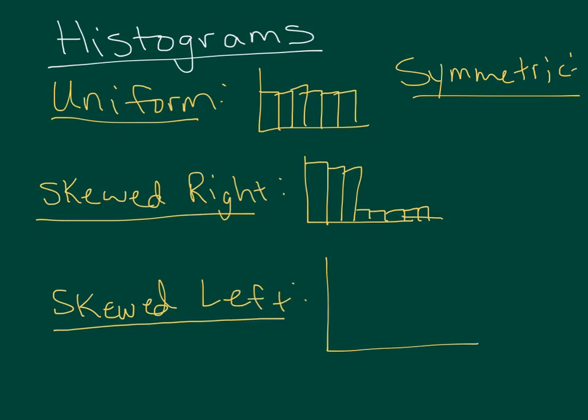Skewed left is just opposite, meaning you have an outlier on the left side. So you have maybe outliers over here, and then you have the majority of your data over here. And symmetric means like perfect, same on both sides. So it's kind of like a stepladder. It just goes up and comes right back down.